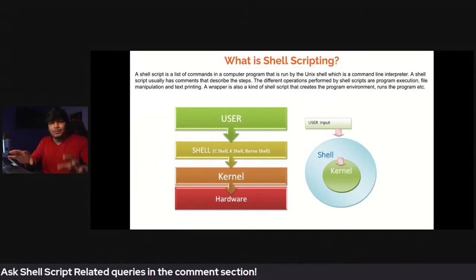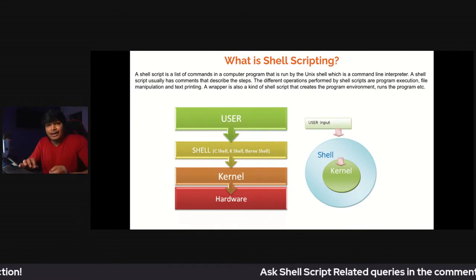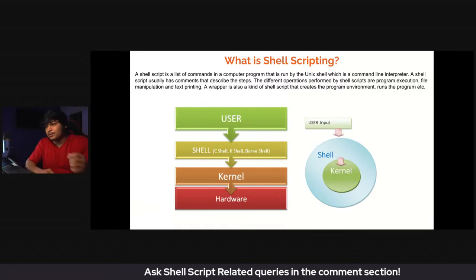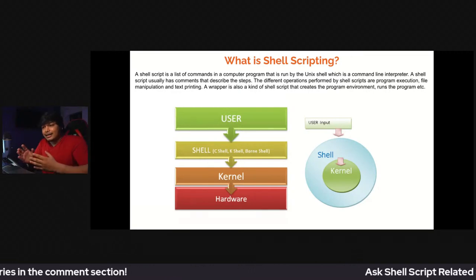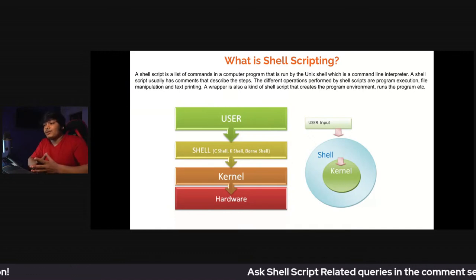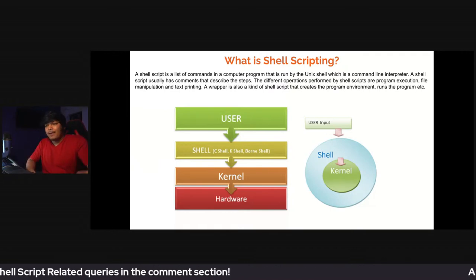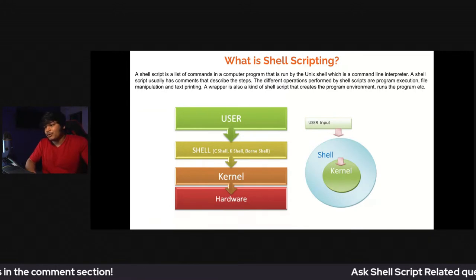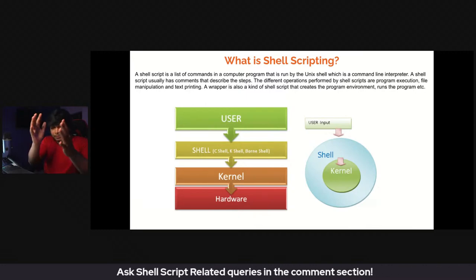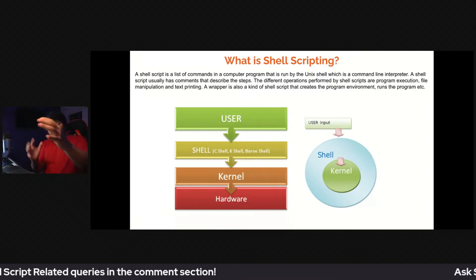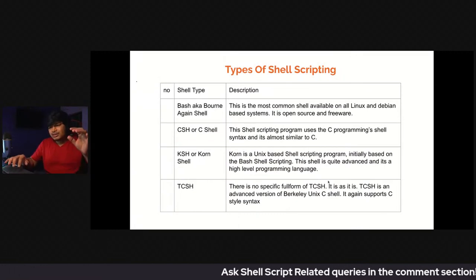In simple words, you are a user giving input to shell scripting or commands, and that is getting interpreted by the kernel. A shell script is a list of commands in a computer program that is run by the shell, which is a command line interpreter. A shell script usually has commands describing different operations — program execution, file manipulation, text printing. These are common use cases. You can create big scripts with many lines, each command doing something.